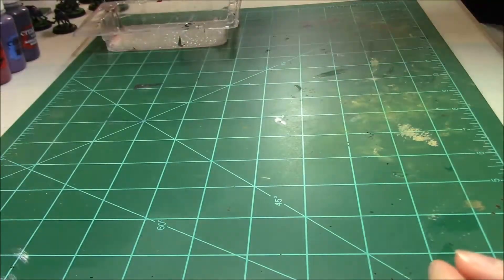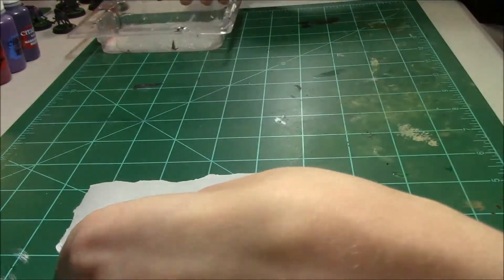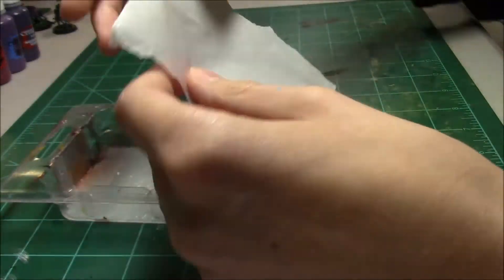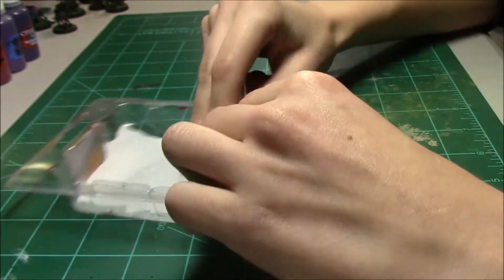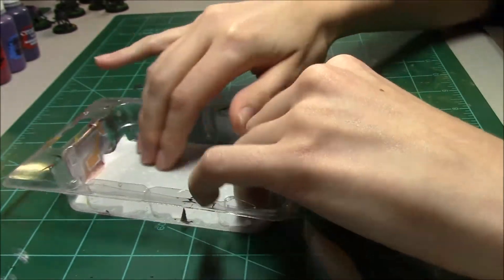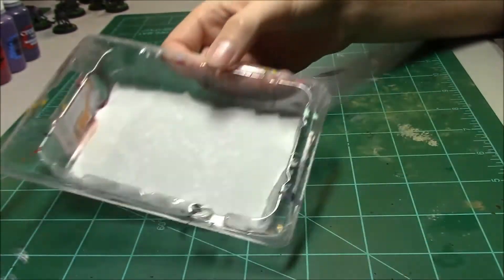Take some parchment paper and make it into the same shape, then lay it on top of the already wetted paper towel. Then I'm going to add some more water.